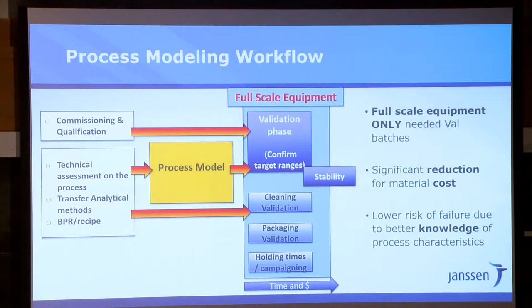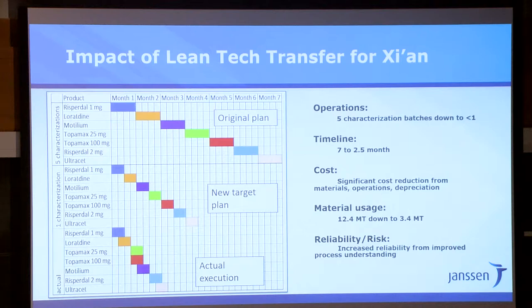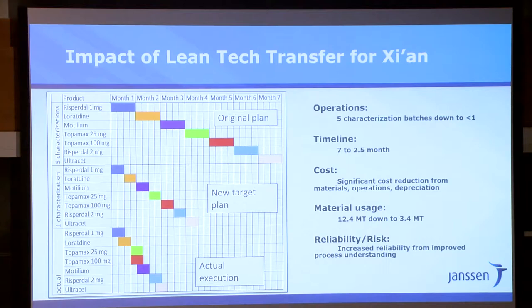We did only a single confirmation batch to make sure that we didn't miss something, and brought all these reductions in time and in costs. The risk of failure was actually much lower than doing it the traditional way. The original plan would have taken almost eight months of empirical testing with no spaces in between the various products — even assuming everything went very well. We came in with a target plan that was much more compressed, focused on a single confirmation batch for everything. In the end, as we brought the data and the models and we learned, we were able to do it in an even much shorter way, showing for example that two products had such similar processes that the same model could be used for both.